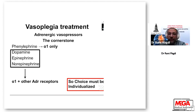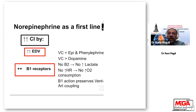Regarding treatment, the first-line cornerstone agents are adrenergic vasopressors. Phenylephrine has alpha-1 activity only, while dopamine, epinephrine, and norepinephrine have alpha-1 and other adrenergic receptor activity — so the choice must be individualized. Norepinephrine remains the first line of management. It increases cardiac index by increasing diastolic volume and stimulating beta-1 receptors. Its vasoconstrictive effects are equal to epinephrine and phenylephrine, and greater than dopamine. It has no beta-2 activity, so no increase in lactate, heart rate, or oxygen consumption, and its beta-1 action preserves ventricular-arterial coupling.